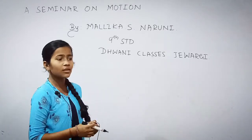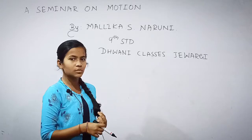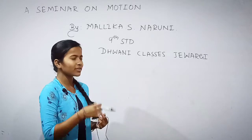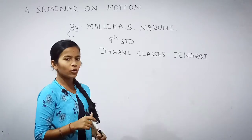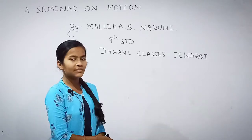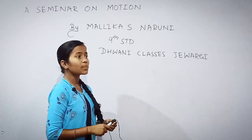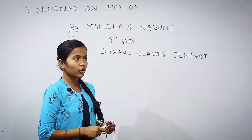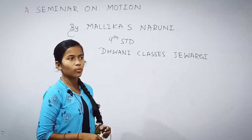Uniform motion: a body travels equal distance in equal interval of time. Non-uniform motion: a body travels unequal distance in equal interval of time. It is called as non-uniform motion.